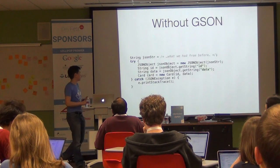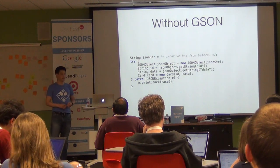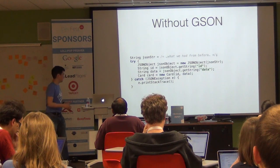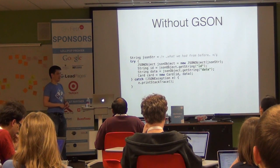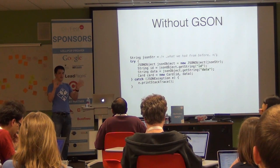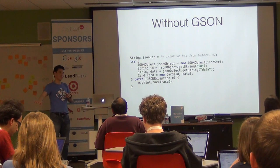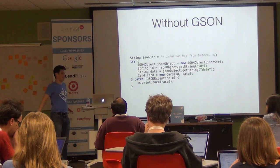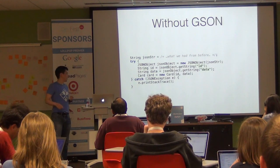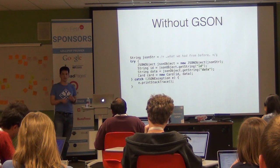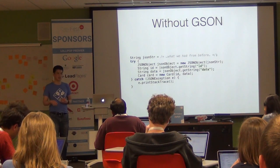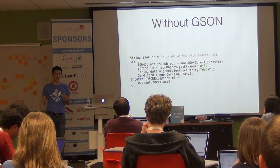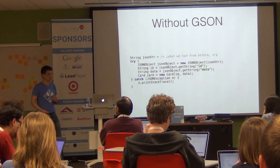Without GSON, converting a simple two-field JSON object into a Java class requires a lot of effort. You'd get the JSON string from Retrofit, create a new JSONObject — the one that's existed since Android 1.0 — manually extract every field, create a constructor or setters for your Card object, and wrap it all in a try-catch because JSONObject throws exceptions. That's a lot of work.